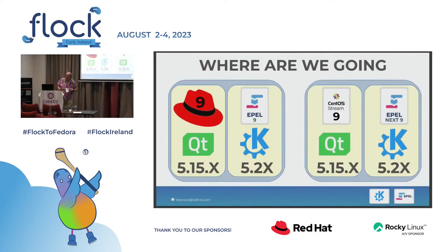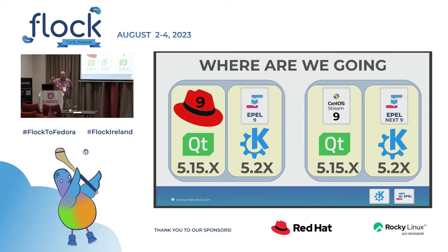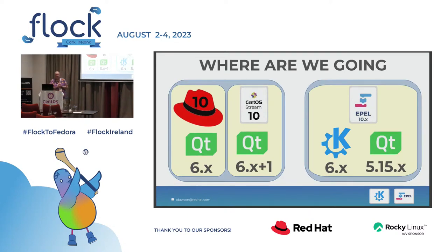Now this is probably what you all came for — what are we going to do next? For RHEL 9 it's not too exciting: we're continuing what we're doing until we can't update anymore. We're going to follow the Qt5 versions from Fedora 38. At some point Fedora is going to move to Qt6, and RHEL 9 is going to stay on Qt5 — that is the current plan. Qt6 is already in RHEL 9, and we will continue to update it.